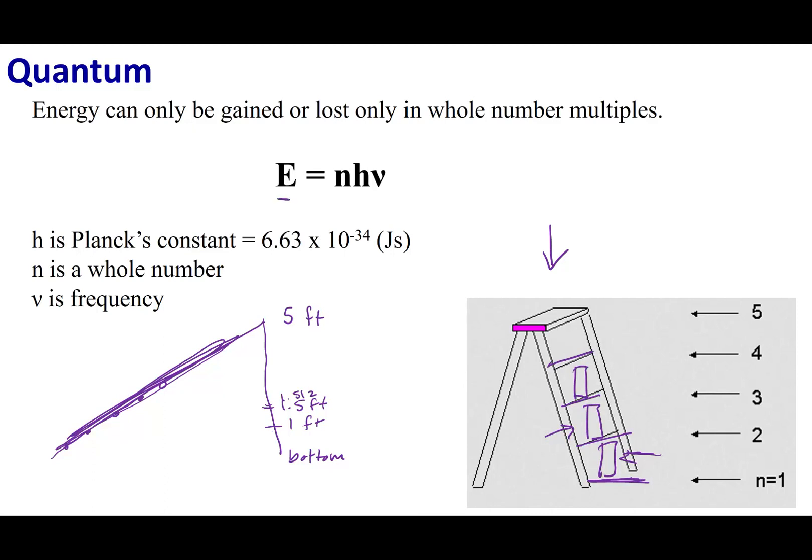This reconciled the black body problem, and we get an equation out of this. We say that energy is equal to n times h times v. Now n is going to be a whole number. This is the number of packets that I am going to transfer. Remember, I cannot transfer half a packet of energy. I can only transfer one, two, three, and so on. This has to be a whole number. Now v here is the frequency. This is the equation to find the energy of light. And then h is Planck's constant, and you'll see this on your information sheet.